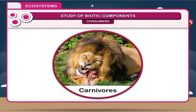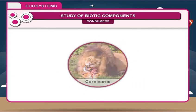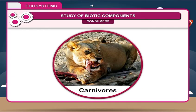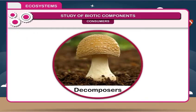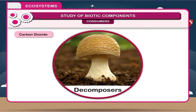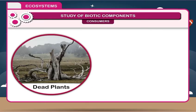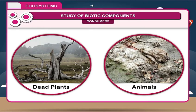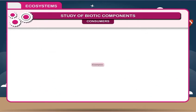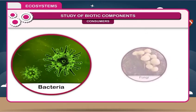2. Carnivores: These animals feed on herbivores and are flesh eaters. These animals catch their prey and eat it; they are called predators. 3. Decomposers: Decomposers are living organisms that feed on dead organisms and decompose them into nutrients, carbon dioxide, and water. This process is called decomposition. Dead plants and animals along with faecal matter are called detritus. Examples include bacteria and fungi.